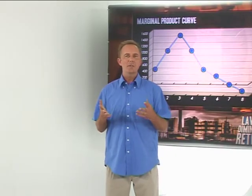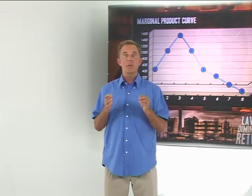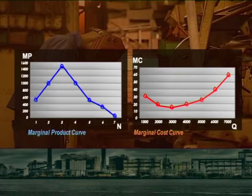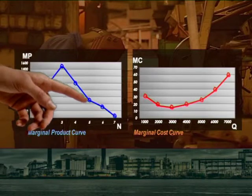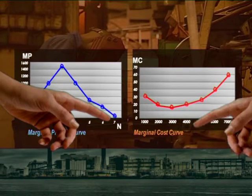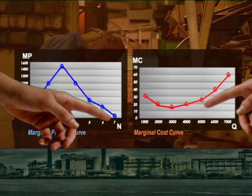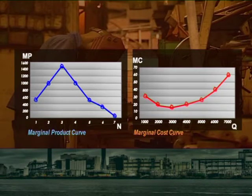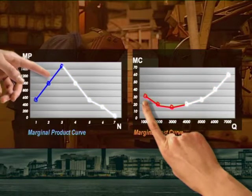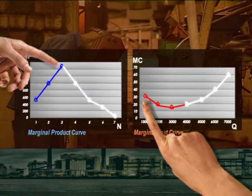What happens to marginal cost if the marginal product of labour decreases? Since we pay each worker the same wage, if the marginal product of each new worker falls, it suggests that the additional wages we're paying are producing less and less. So our marginal cost is actually increasing — as marginal product declines, marginal cost increases. It also follows that when marginal product is at its maximum, marginal cost will be at its minimum.